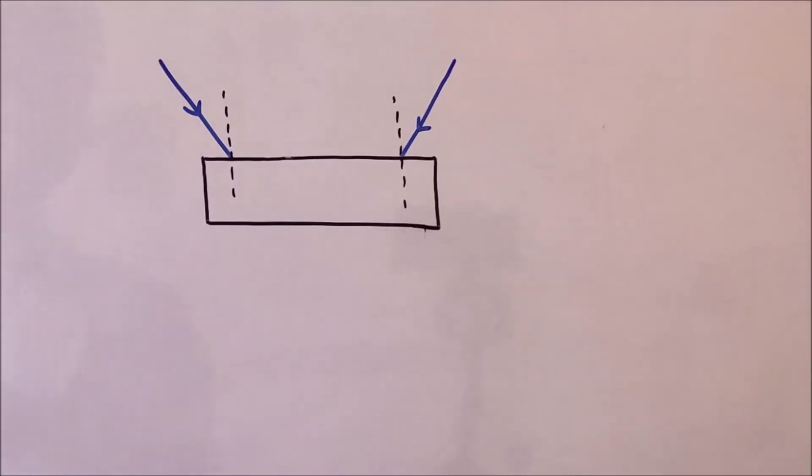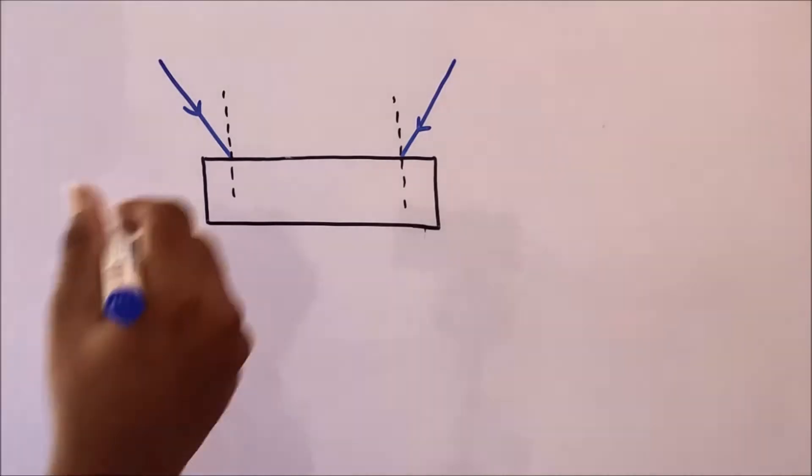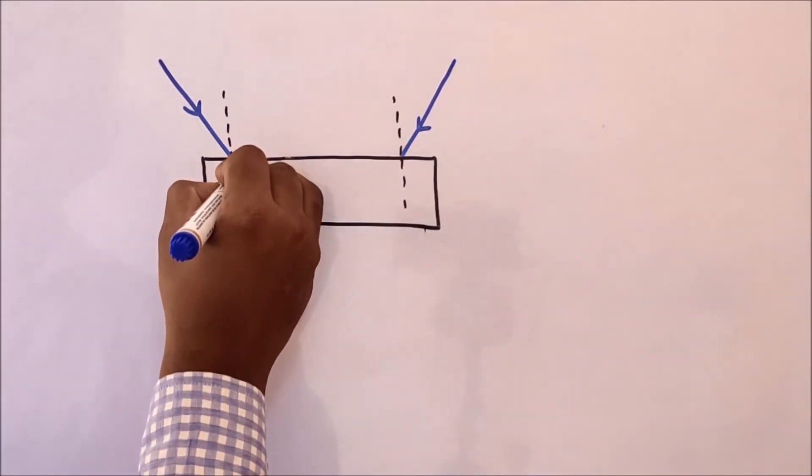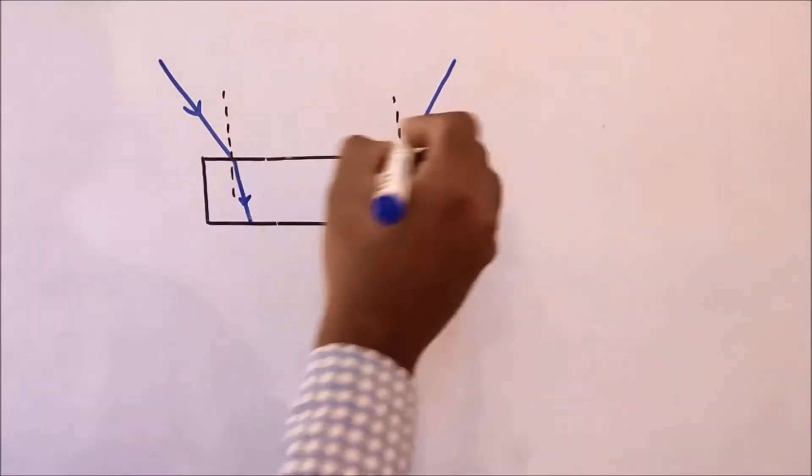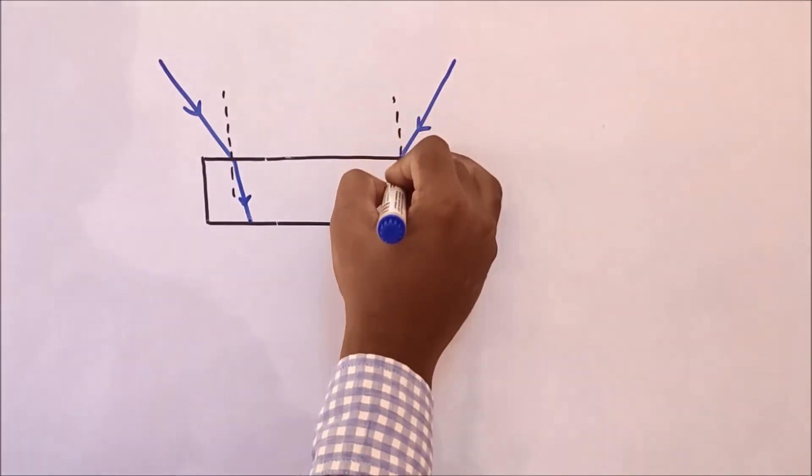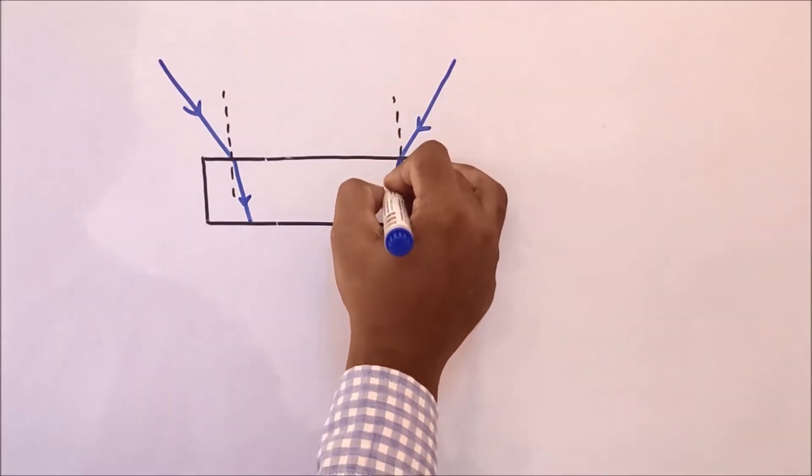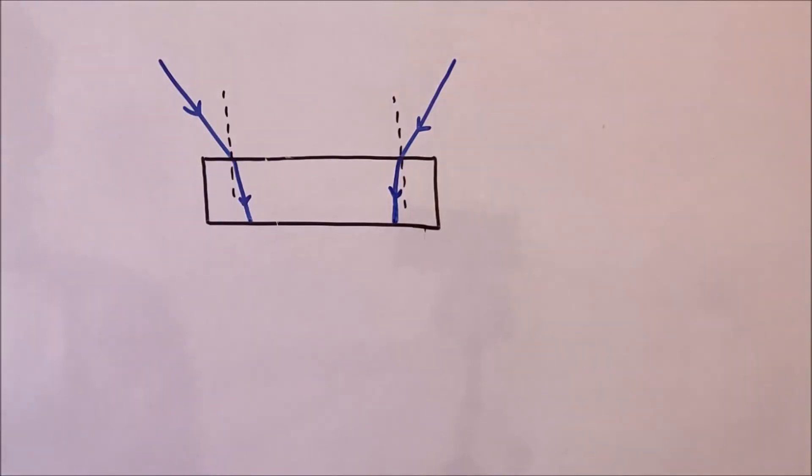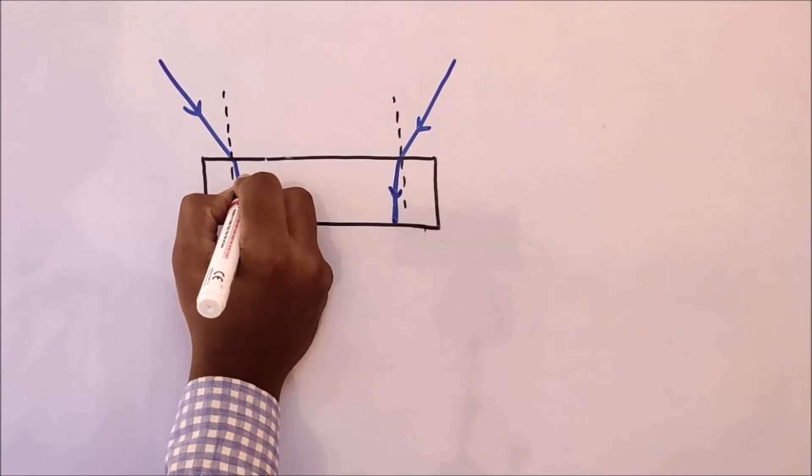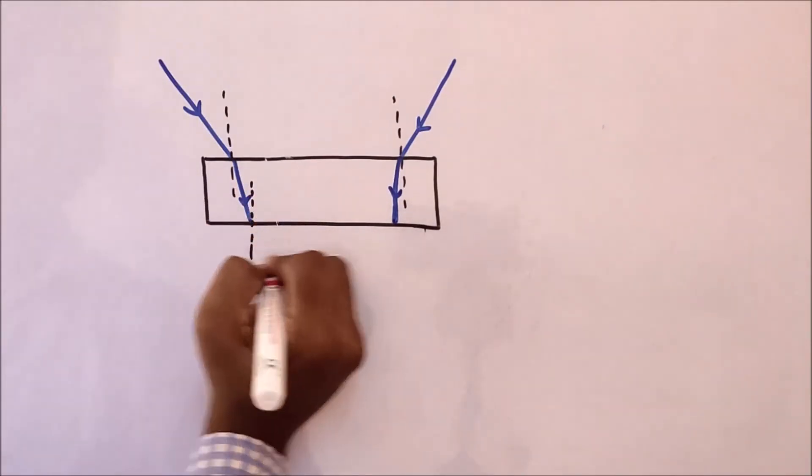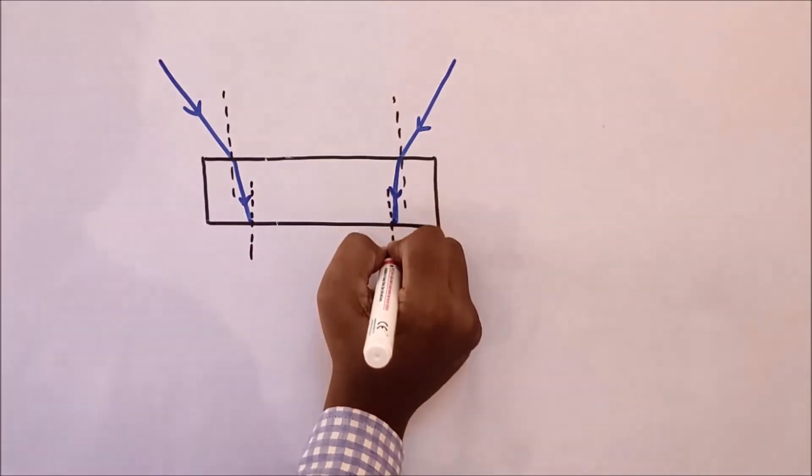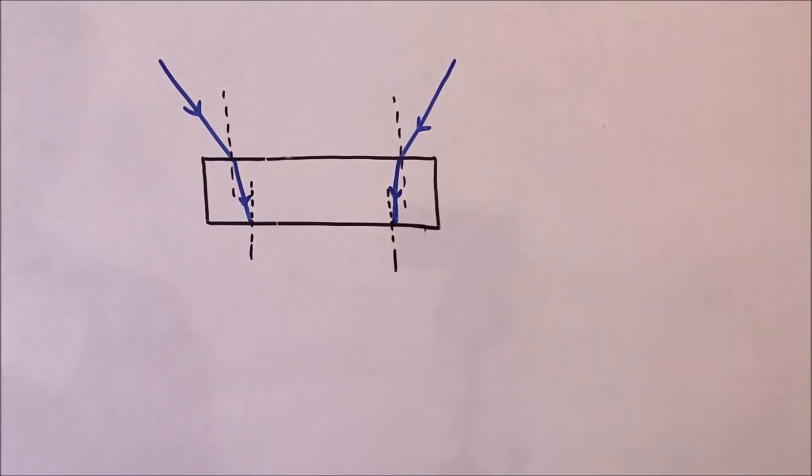So the light is traveling from rarer medium to denser medium, so the rays would bend towards the normal. Now again, one more point of incidence, and here we have to draw normal.